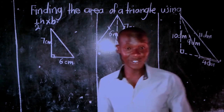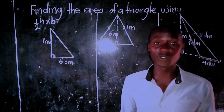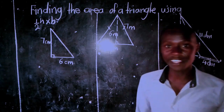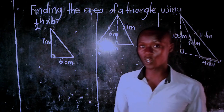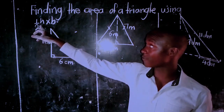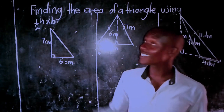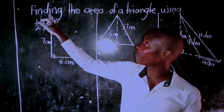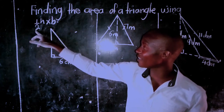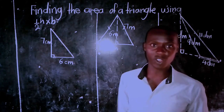Hello friends, my name is Noria Maiko and today I'm going to take you through finding the area of a triangle using the formula: a half of height times base. This is the formula for finding the area of any triangle.